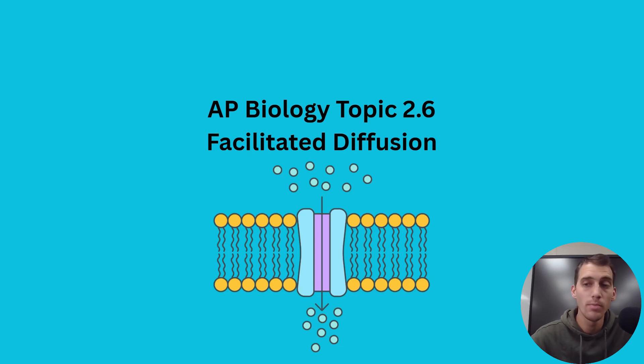That is basically moving molecules from low concentration to high concentration against what's called the concentration gradient and spending a little bit of energy in the form of ATP in order to do that. Today, we're going to talk about a type of passive transport called facilitated diffusion.